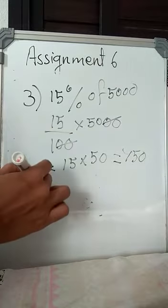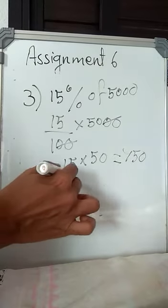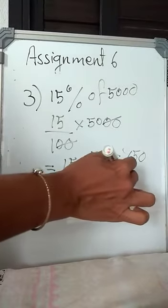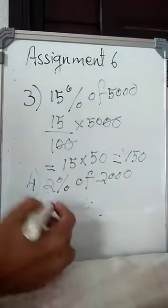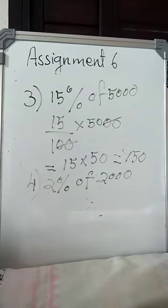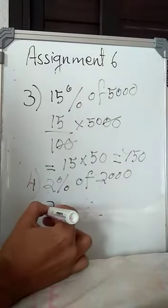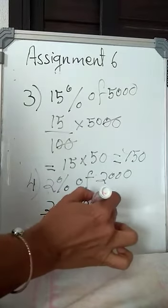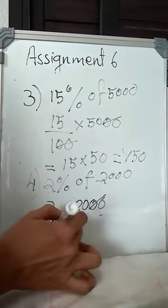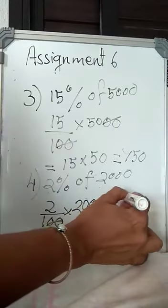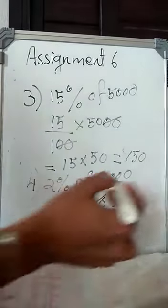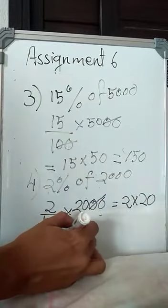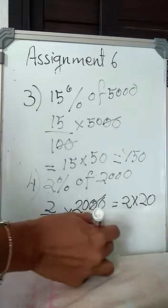Next one, fourth one, 2% of 2000. So this you will write as how? So 2 by 100 into 2000. Cut two of the zeros, what will be remaining? 2 into 20. Right, 2 into 20, what is 2 into 20? 40.